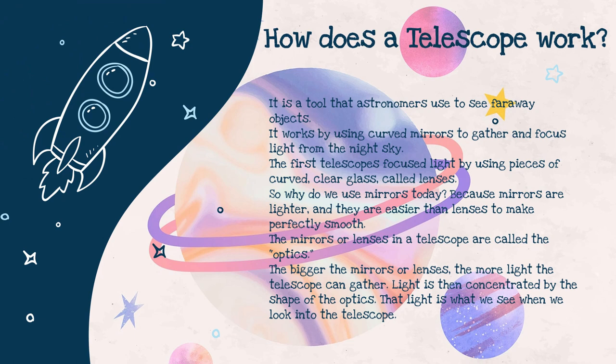Next, let's look at how a telescope works. A telescope is a tool used to observe far-away objects using curved mirrors and lenses to gather and focus light. The first telescopes used curved clear glass lenses to focus light, but nowadays mirrors are more commonly used because they are lighter and much easier to manufacture with a perfectly smooth surface. For lenses, the bigger the lens, the more light the telescope can gather, and that light is then concentrated by the shape of the optics.